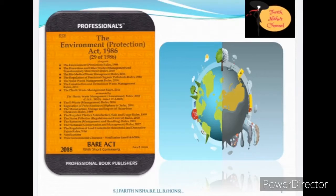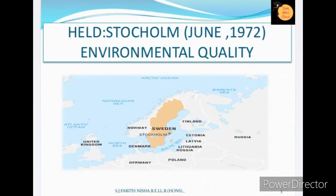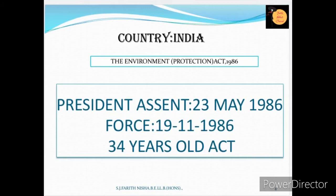In this video, we are going to see about the Environment Protection Act 1986. This evolved from the conference named United Nations Conference on the Human Environment, which was held in Stockholm, Sweden during the year 1972. They had a discussion on world community, which later included discussion on the importance of environment. As a result, we got this act in India — the Environment Protection Act 1986 — to implement and to safeguard and protect our environment.